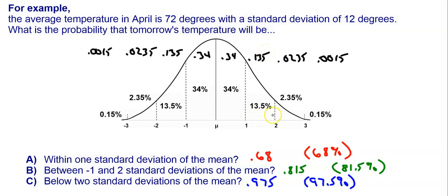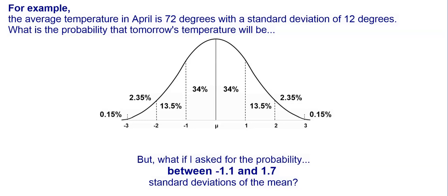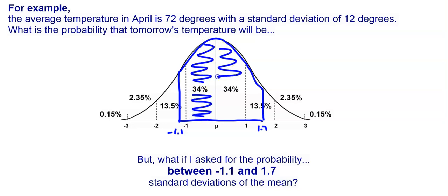So the idea is pretty simple — these areas tell us the probability and give us the percentage of data that falls within each region. But what if the probability that the temperature will fall between negative 1.1 and 1.7 standard deviations is requested? Here's negative 1.1 and here's 1.7 roughly. To find this probability, we need to look at that area of the graph. Since the curve isn't a perfect square, we can't just multiply by 0.7 or 0.1 to get the partial area.